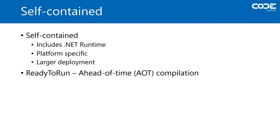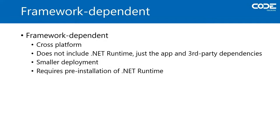Self-contained deployments also have the option of ready-to-run compilation, which is a form of ahead-of-time compilation that can improve startup time. However, the impact is difficult to predict — the files will be much larger, which can actually cause a decrease in performance. The best use case for this option is applications that contain large amounts of code. Framework-dependent installations, on the other hand, are cross-platform. The installation will not include any .NET runtime, just the application and any third-party dependencies, making it much smaller. The drawback is that the application will not run until the appropriate .NET runtime has been installed.